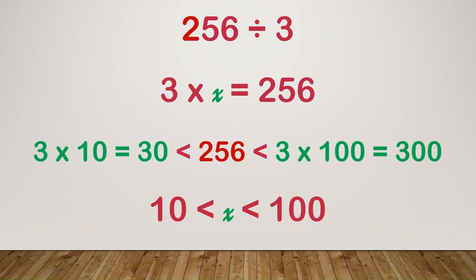This means that 3 multiplied by some number x equals 256. Since 256 lies between 3 times 10, which is 30, and 3 times 100, which is 300, this means that x must lie between 10 and 100 and it's a 2-digit number.